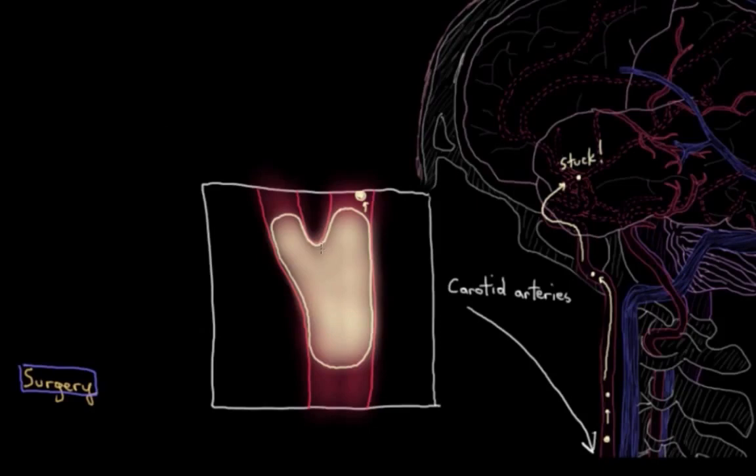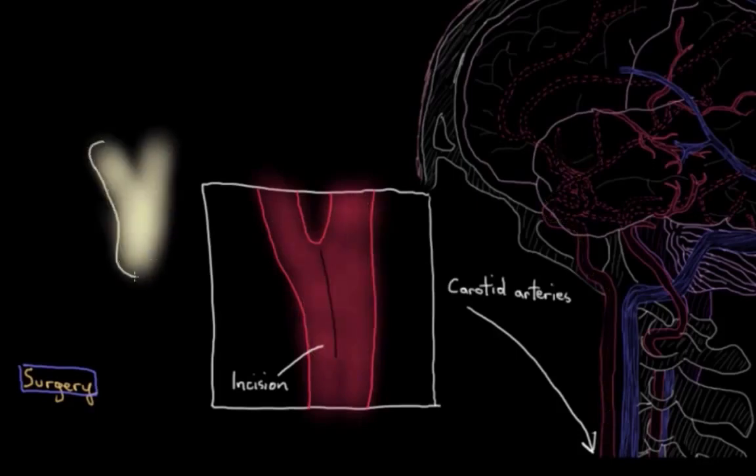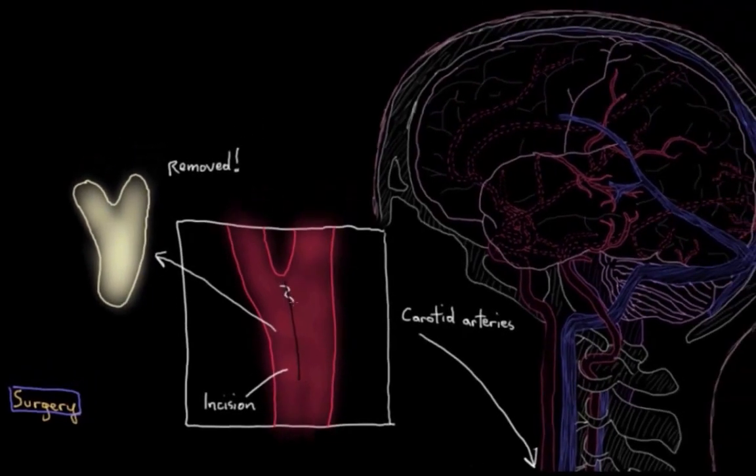There'd be a little incision made in the carotid artery that has all the atherosclerotic buildup, and this whole sort of thick necrotic gunk would be removed, and that'll reduce the risk of further strokes happening in a pretty big way. This procedure is called a carotid endarterectomy.